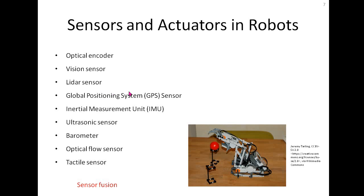Sometimes the measurement from a sensor is not accurate. For example, GPS doesn't give an accurate location, and optical encoders drift with time and become inaccurate. So what we do is use sensor fusion — combining the outputs of multiple sensors along with a filter to get a better estimate than any individual sensor could provide.